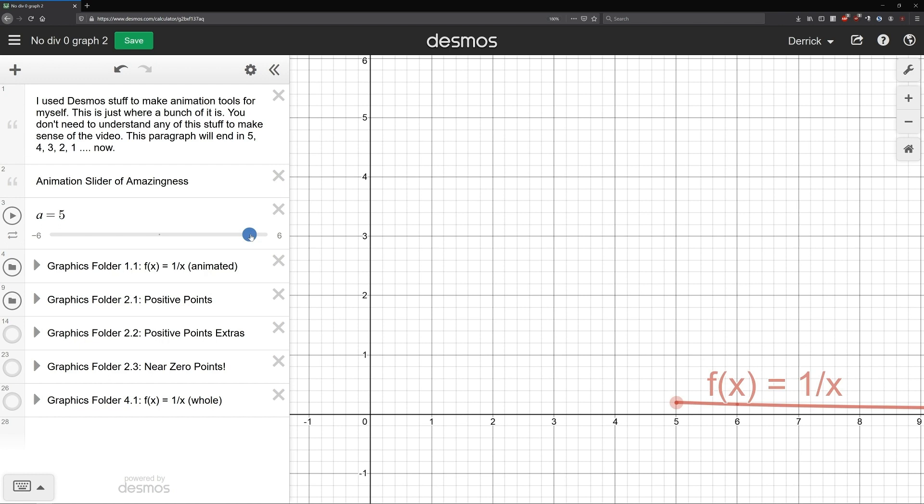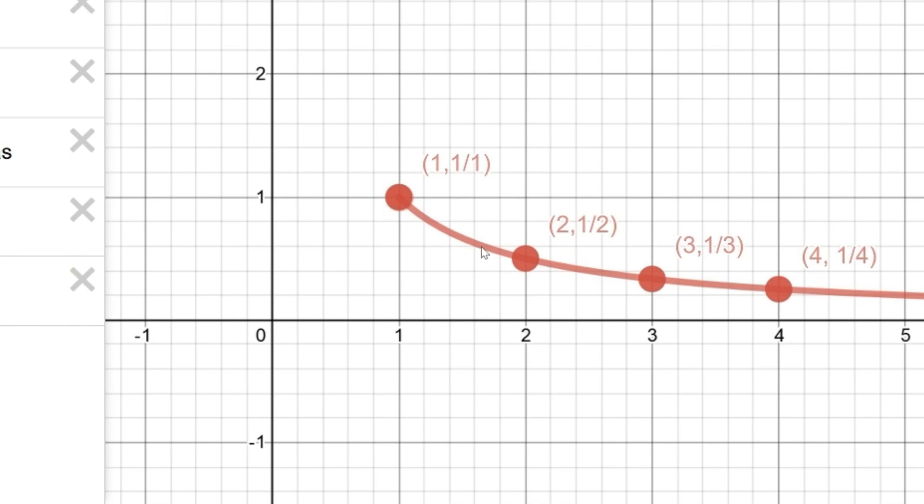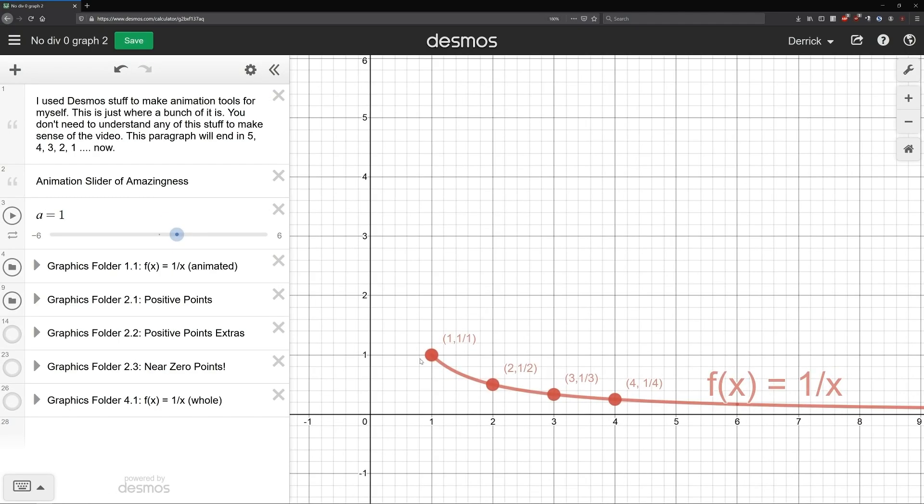This is a graph of the function f of x equals one over x. You can see the four points we had earlier in our explorations: a quarter, a third, a half, and of course, a whole. But you can also see all of these little points in here that are in between those values. But there's no reason we have to stop here. In fact, we can continue sweeping towards the y-axis, and we see what I was talking about a moment ago as it swoops up towards infinity.